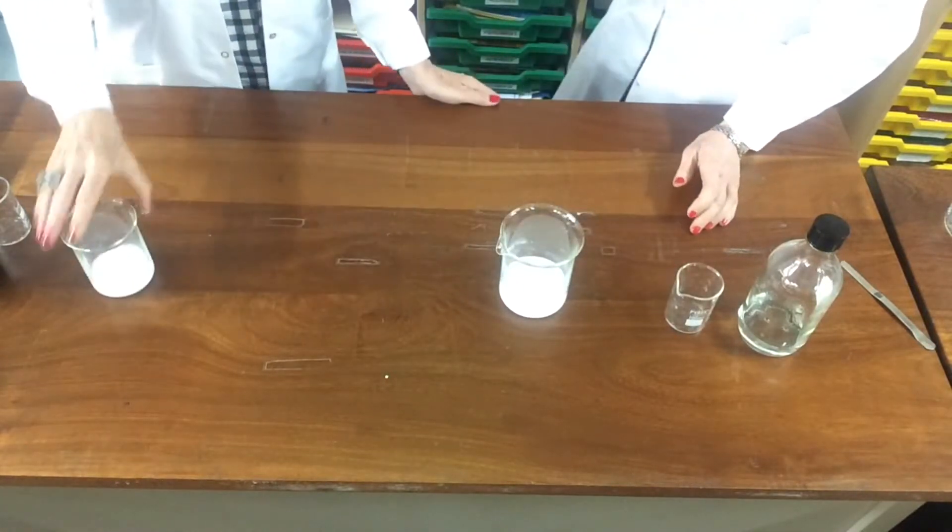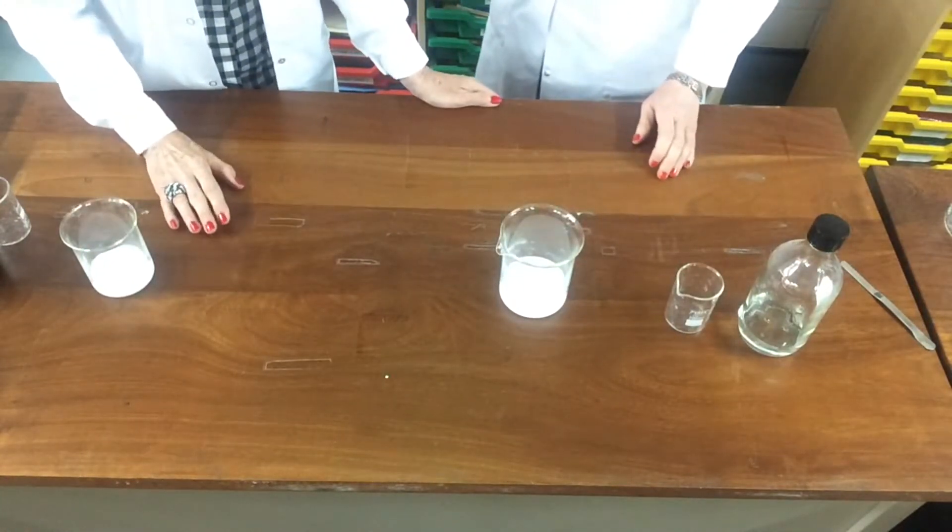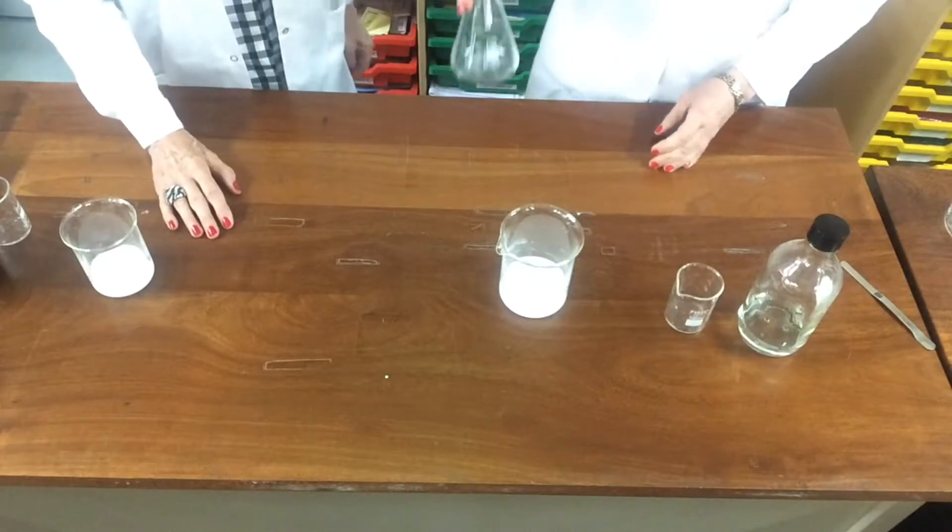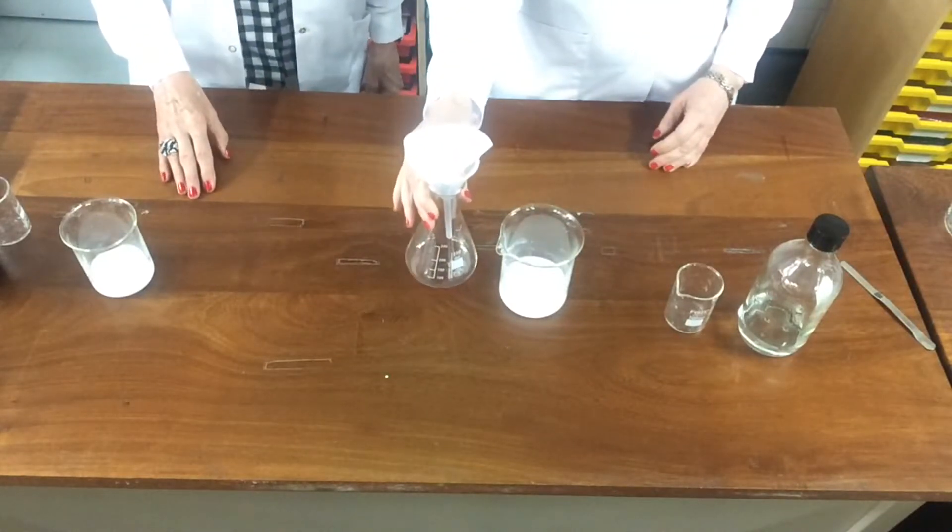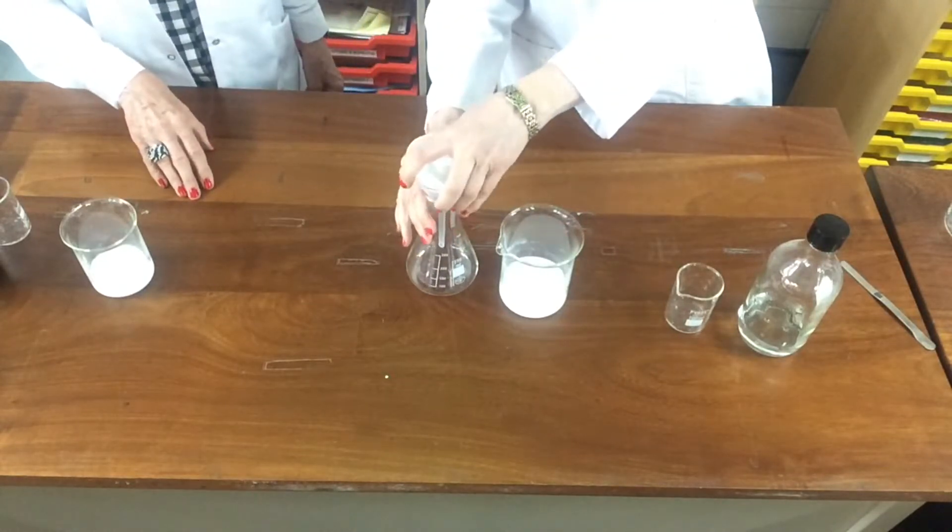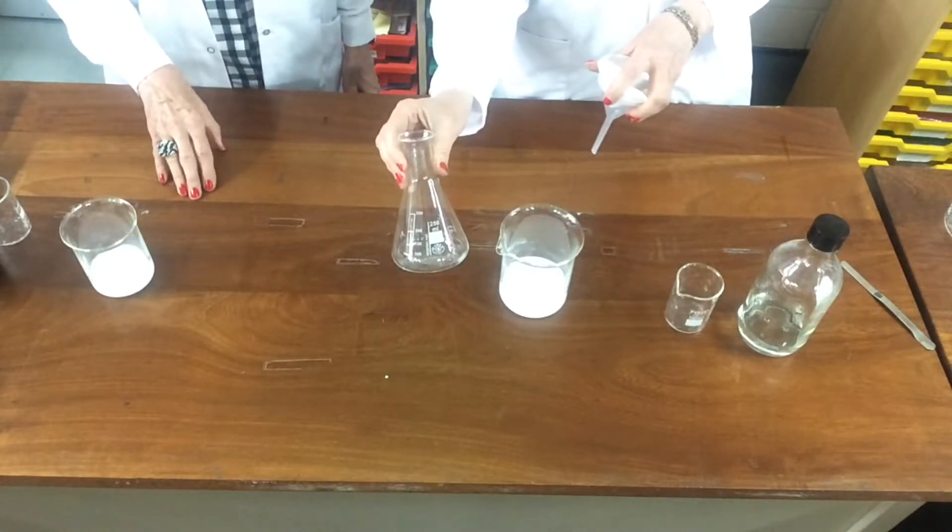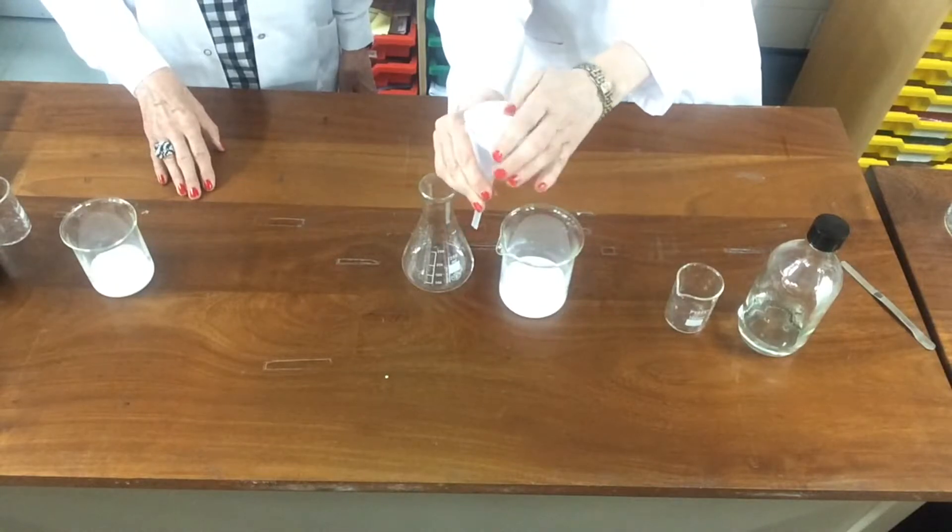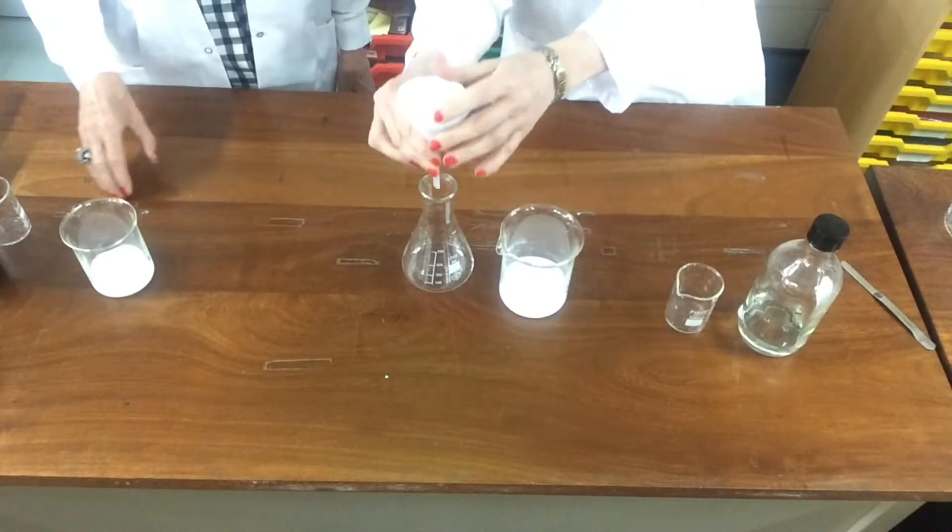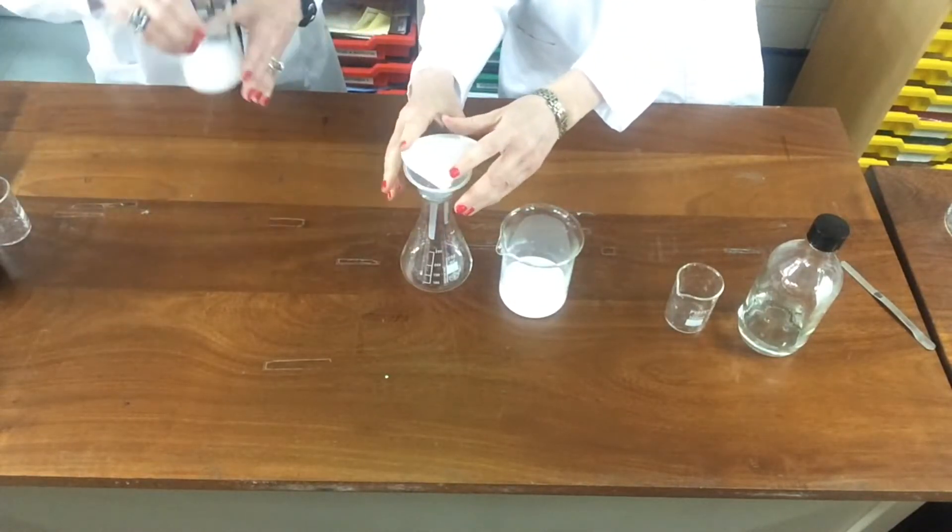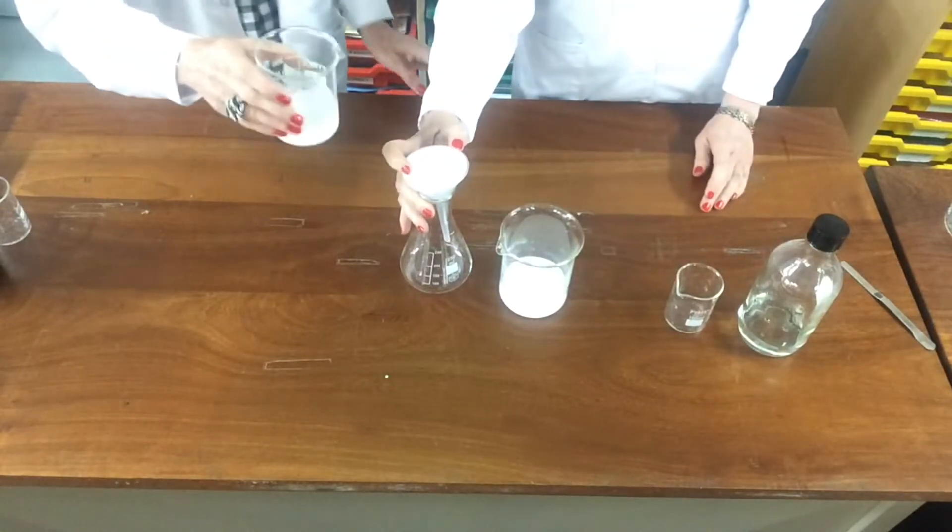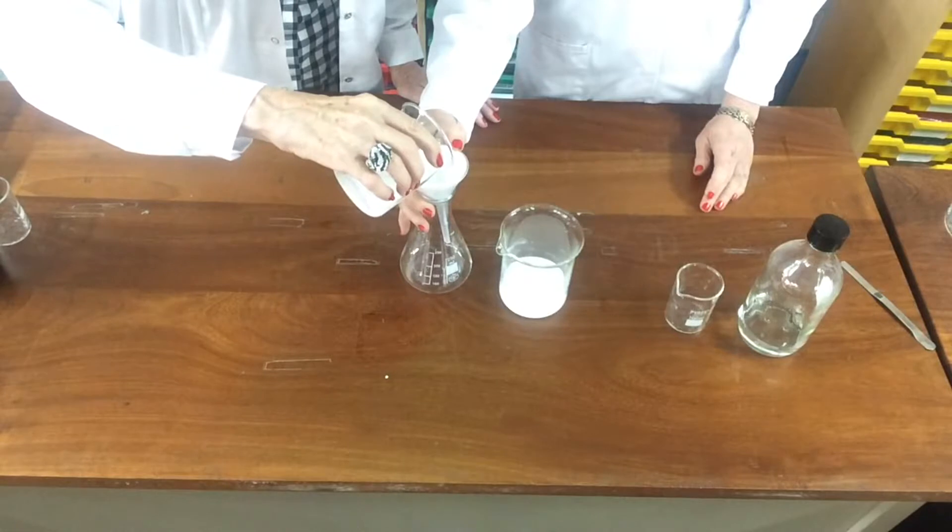And what would be the best method of separating those, Ms. McFarland? Well as you mentioned in the previous practical we're going to use a process of filtration. Luckily we have the filtration apparatus to hand, which as you know is the conical flask, the filter funnel with a folded piece of filter paper in the top. So all we have to do, hold that in place, is pour our mixture into the top.